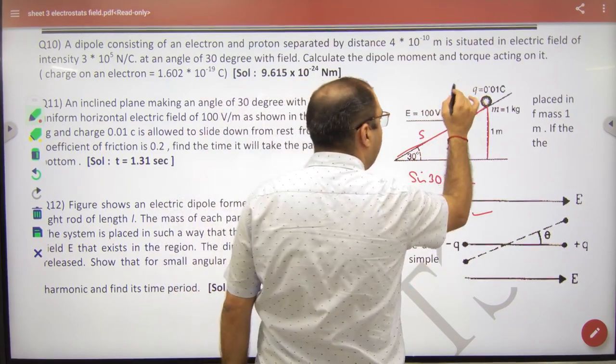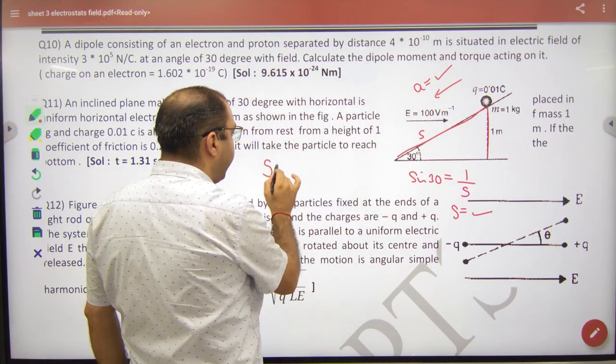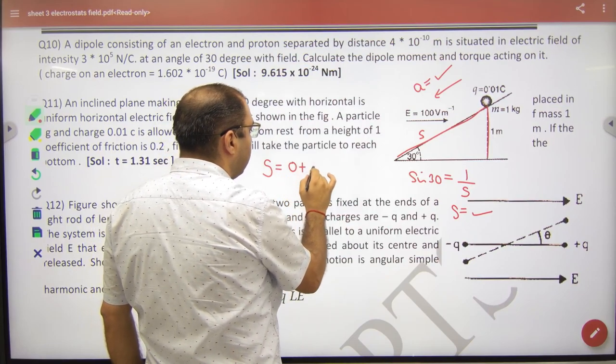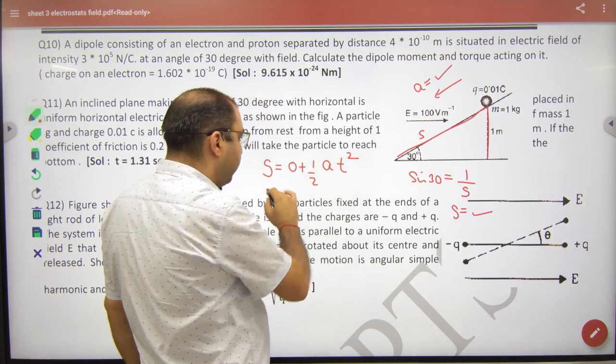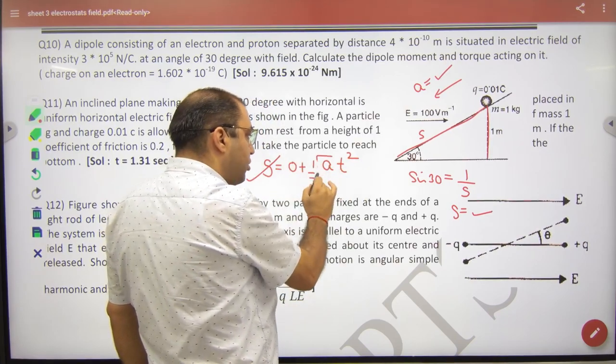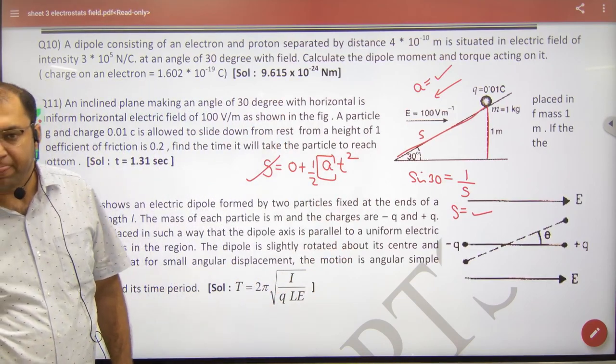So if you tell the acceleration of this body to come down, tell the acceleration to me, then I can apply s is equal to 0 plus half into at squared. So s I have removed. I removed the acceleration. I removed the value, time can be calculated. So the concept has come.